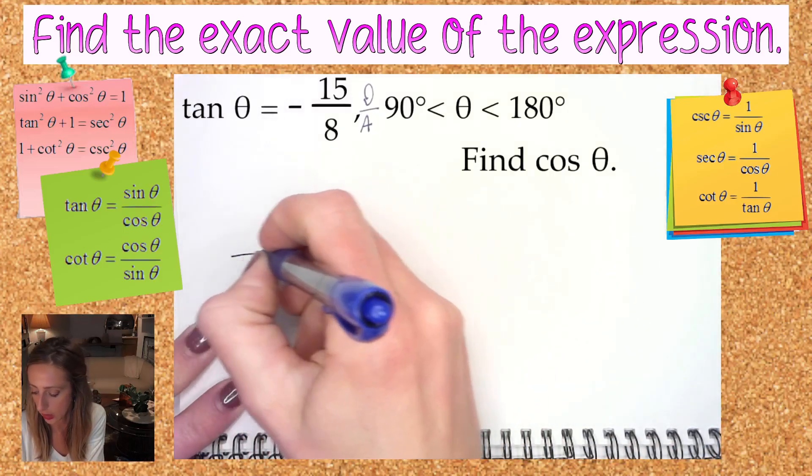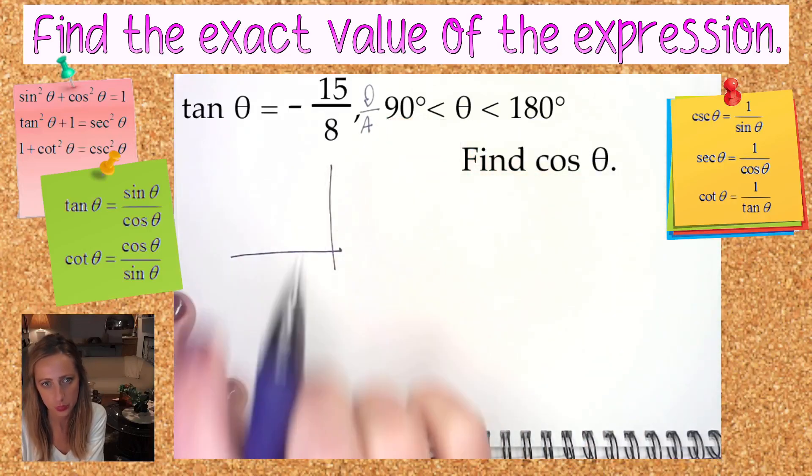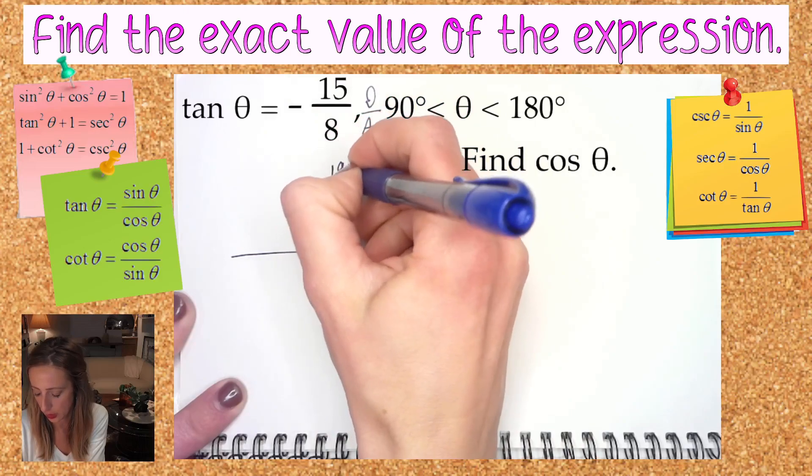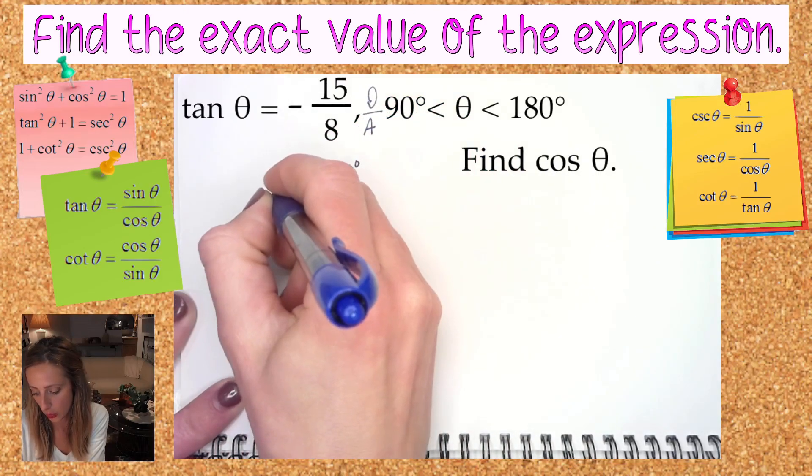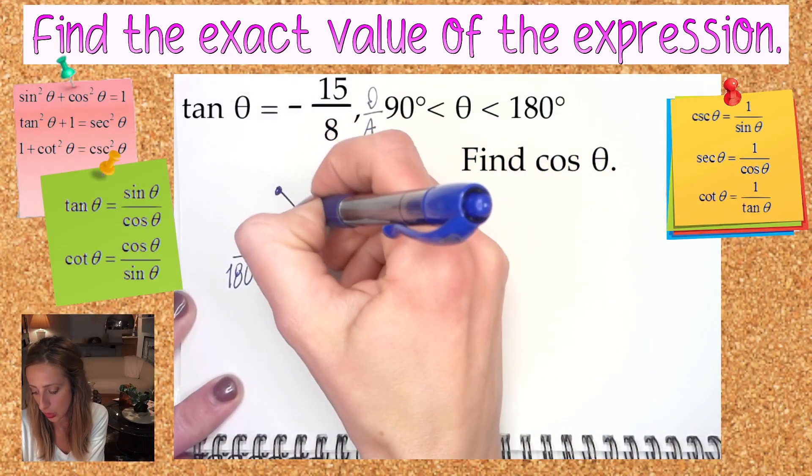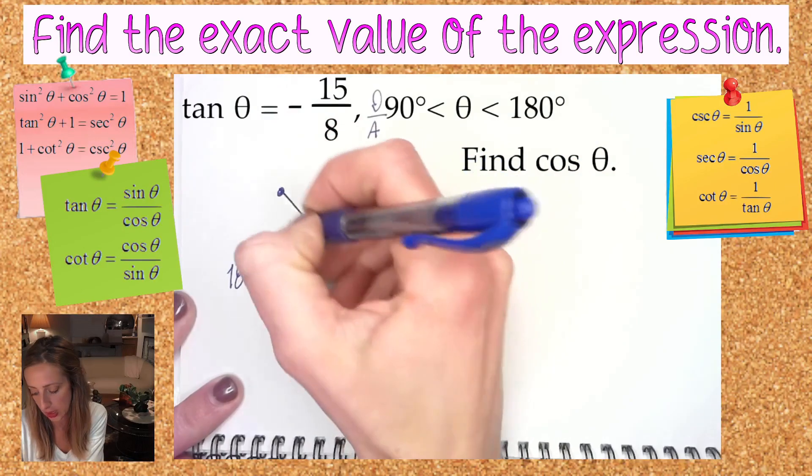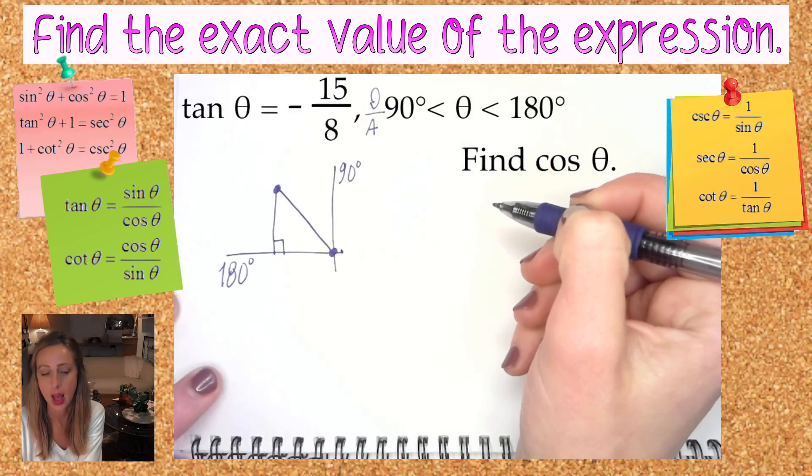So how can we get this one going? Here we have quadrant two because that's what we're looking at, we're looking between 90 and 180 degrees. I'm going to pick a random point in there, it really doesn't matter, and I'm going to connect it to the origin, and then I'm also going to connect it to the closest x-axis.